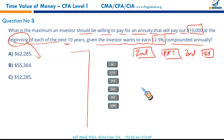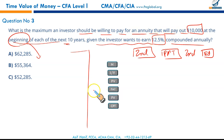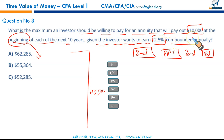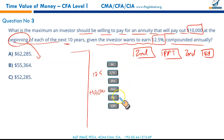Now let us extract the numbers to plug in and get the result. The payment is $10,000 positive. The investor wants to earn 12.5% compounded annually — no change in interest rate, simply plug in 12.5. Present value is to be calculated, future value is zero, and N is ten periods.